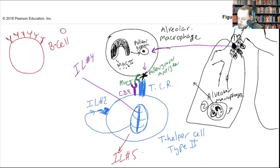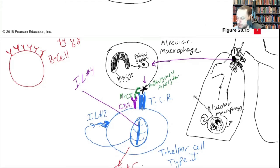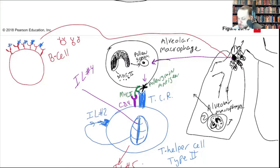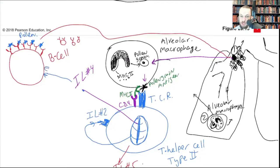The moment the T cell becomes very active, it starts to secrete other interleukins — cytokines: interleukin type 4 and interleukin type 5. We also have a B cell — a B lymphocyte — that is currently inactive. On this B cell, different antibodies are expressed, and these antibody receptors must be very specific to the incoming antigen.